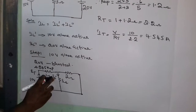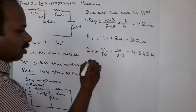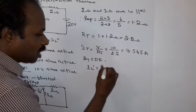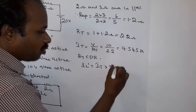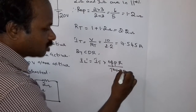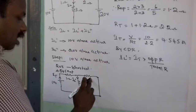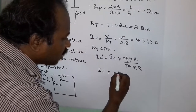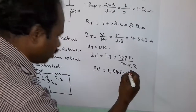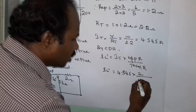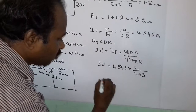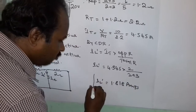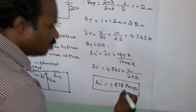To find IL dash, we use the current division rule. By CDR, IL dash equals ITotal multiplied by the opposite resistance divided by total resistance. Here, 2 ohm is the opposite resistance to the 3 ohm branch. So IL dash equals 4.545 × 2 divided by (2 + 3), which gives IL dash equal to 1.818 amps. This is the current through the load due to the 10V source alone.